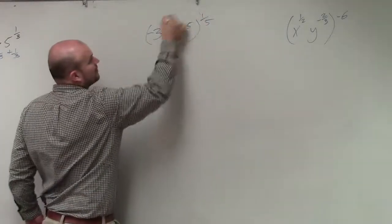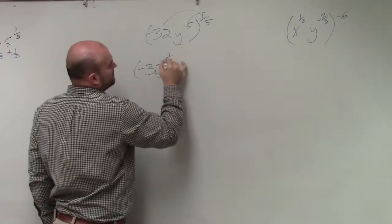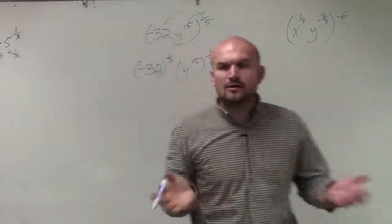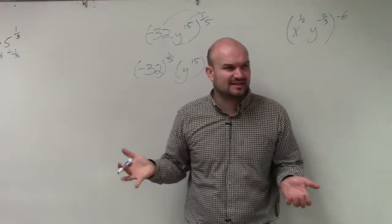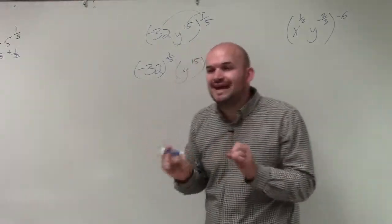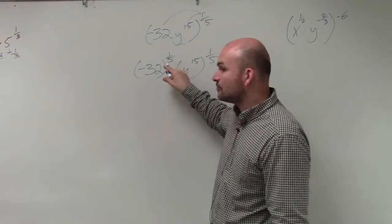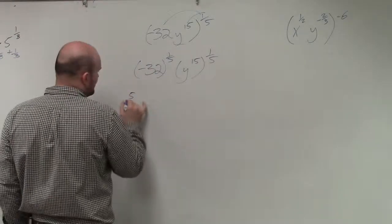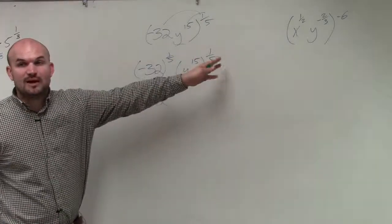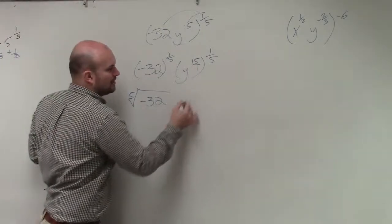So if I distribute the one-fifth power, that's going to be negative 32 to the one-fifth power and y to the 15th to the one-fifth power. Now, do I know what negative 32 to the one-fifth is? Conceptually, no. I don't really understand what that is. So what I'm going to do is I'm going to rewrite that as a radical expression. So if I rewrote that as a radical expression, that is the root. That's the power. So it's the fifth root of negative 32. Then these, when I have a power raised to a power, I multiply, right? So that's going to be 15 times one-fifth, which is just y cubed.